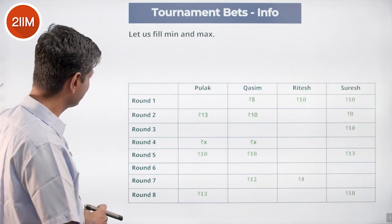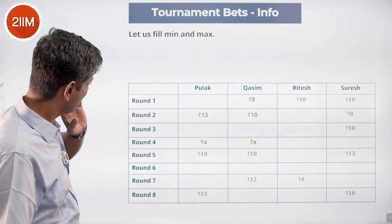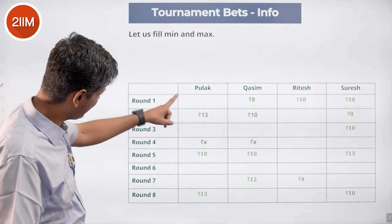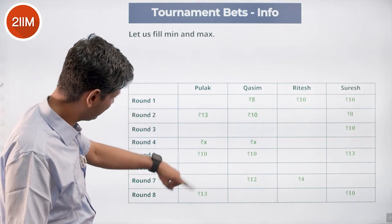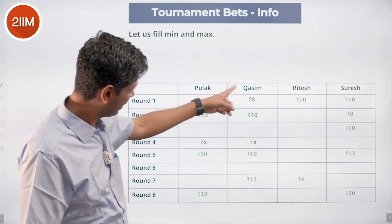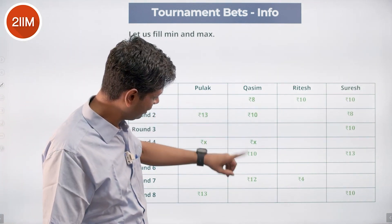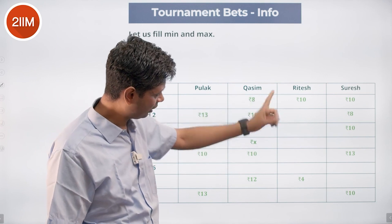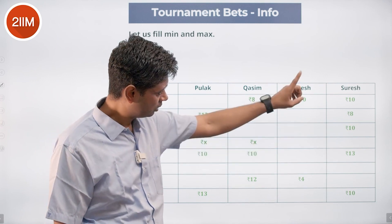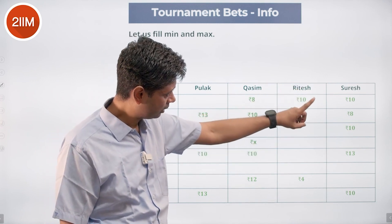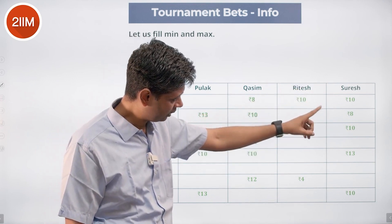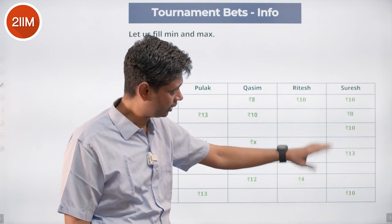Looking at the table: Pulak shows 13, 10, 13, 8, 10, 10, 12, 10. Then: 4, 10, 8, 10, 13, 10. Some numbers have been filled in across the rows for the four players.